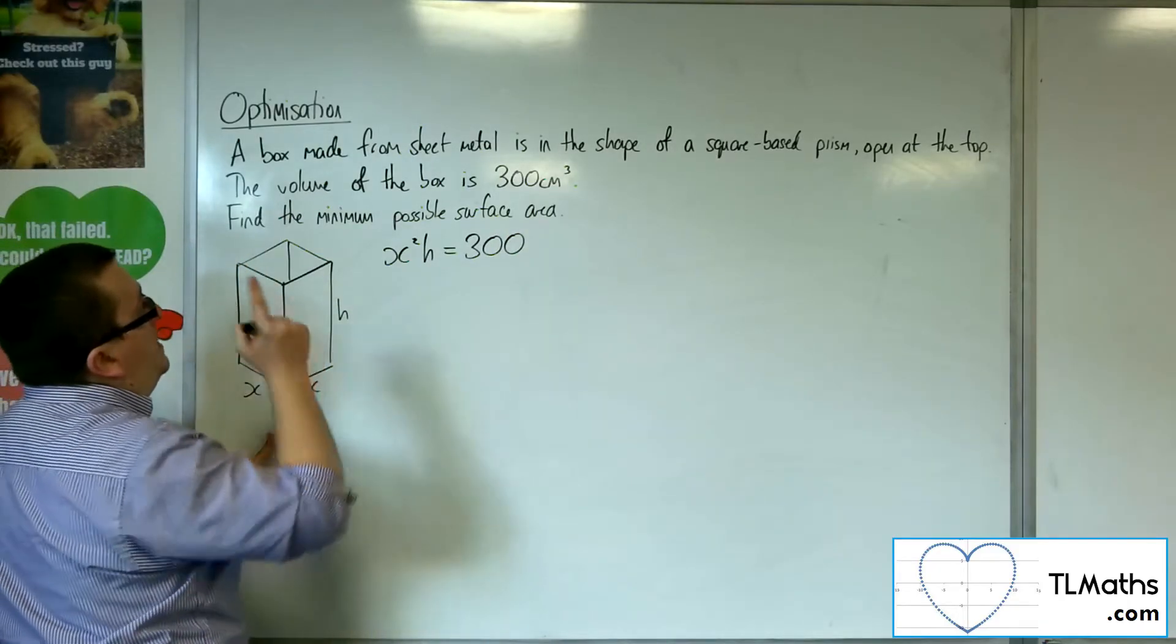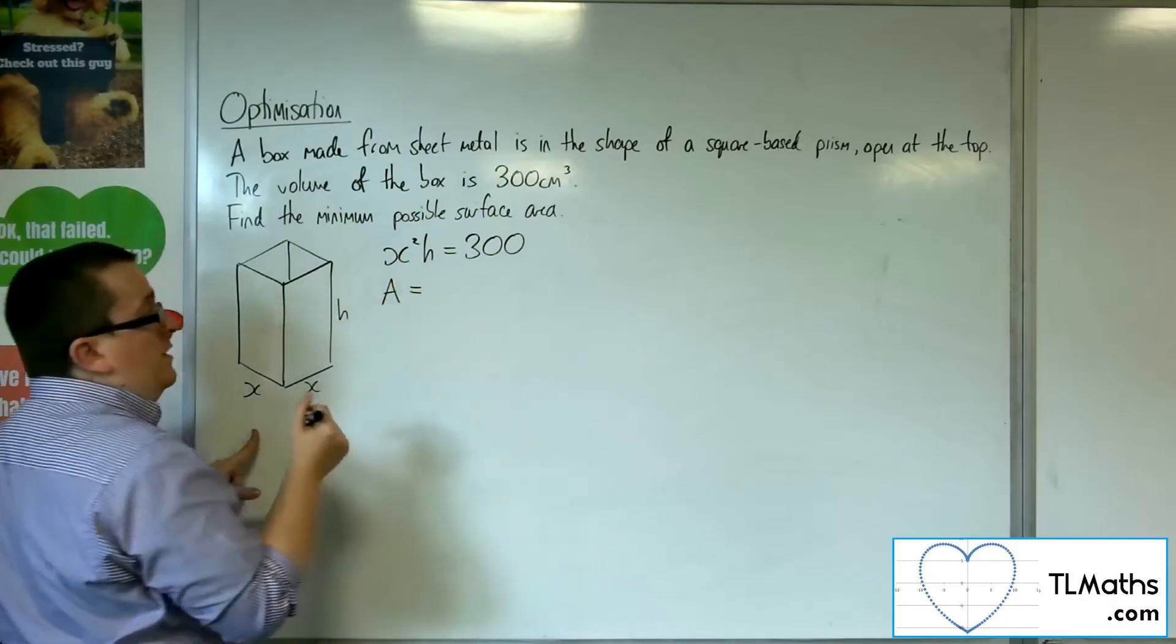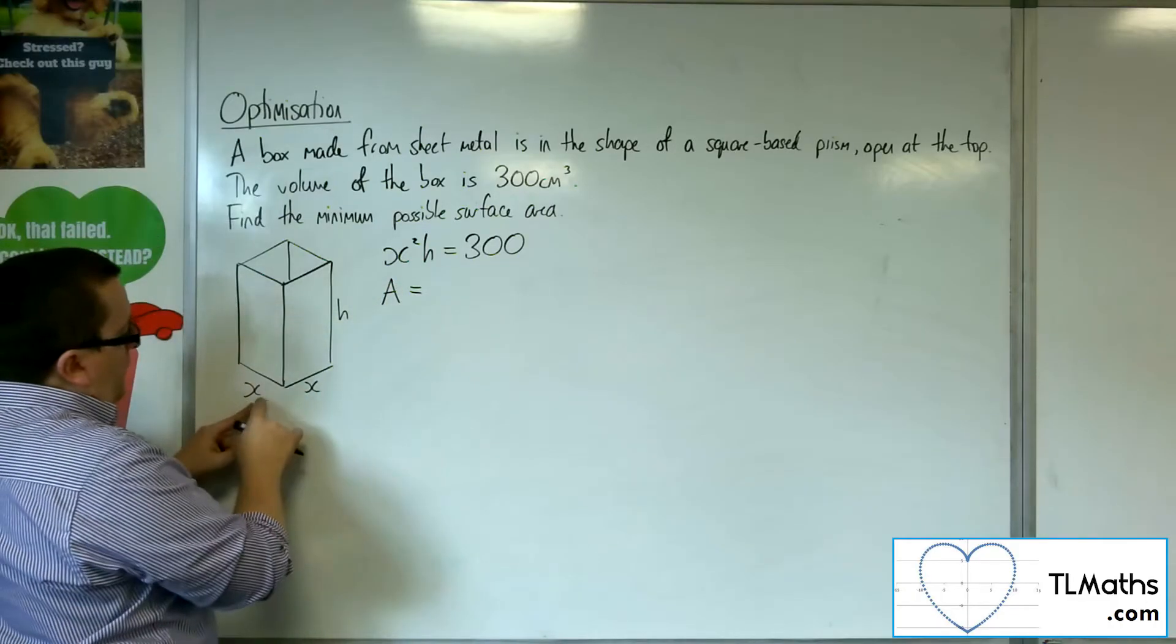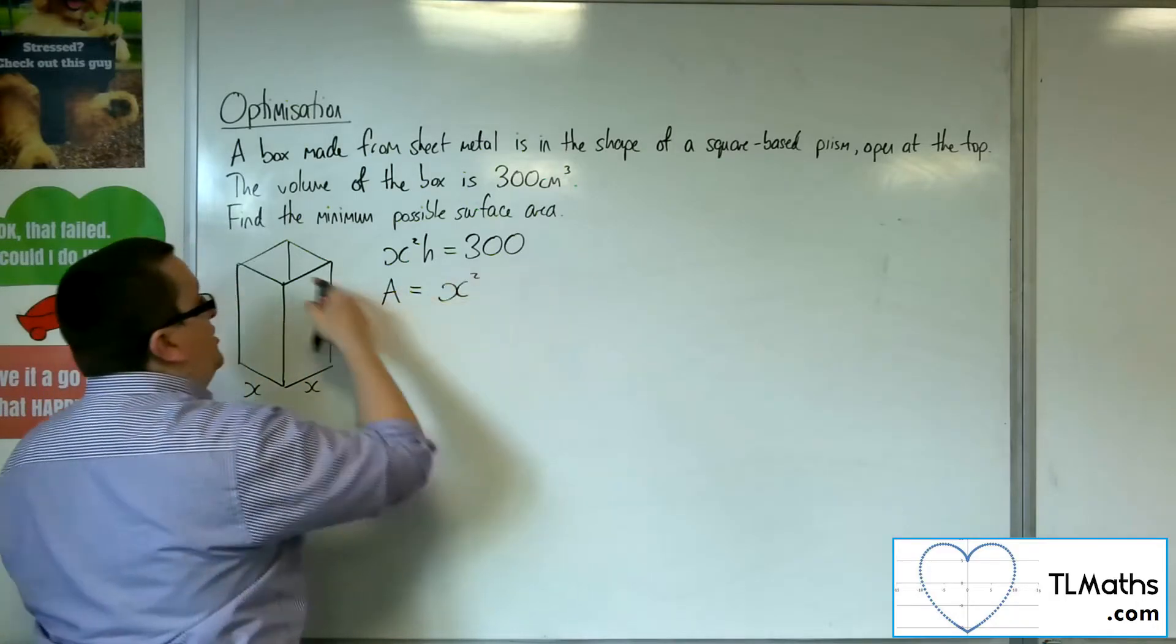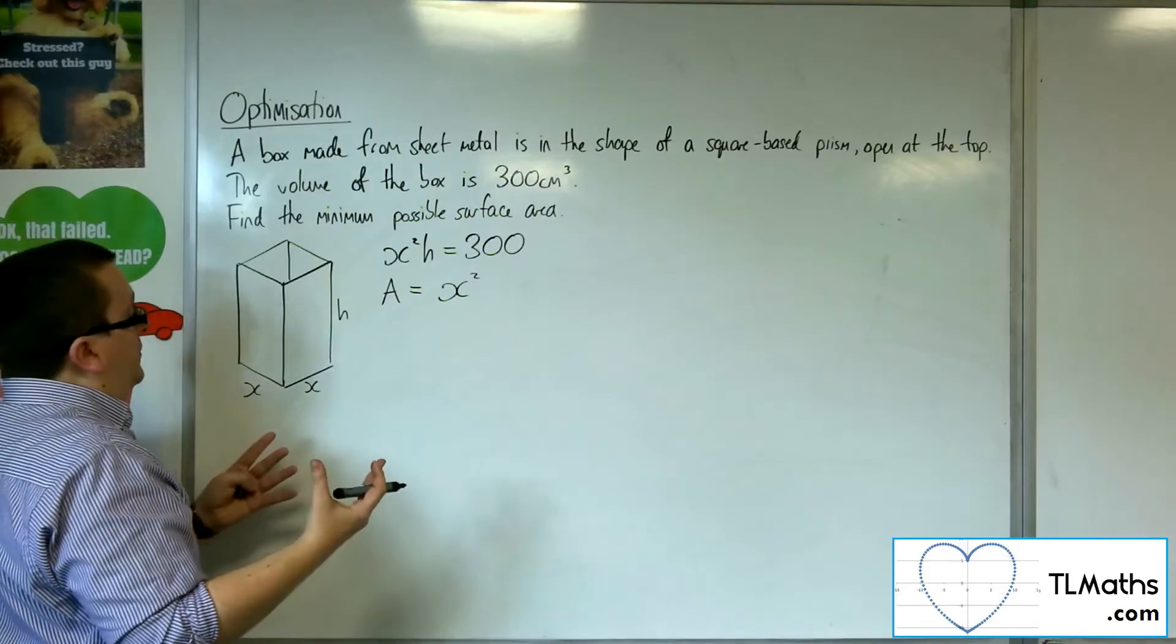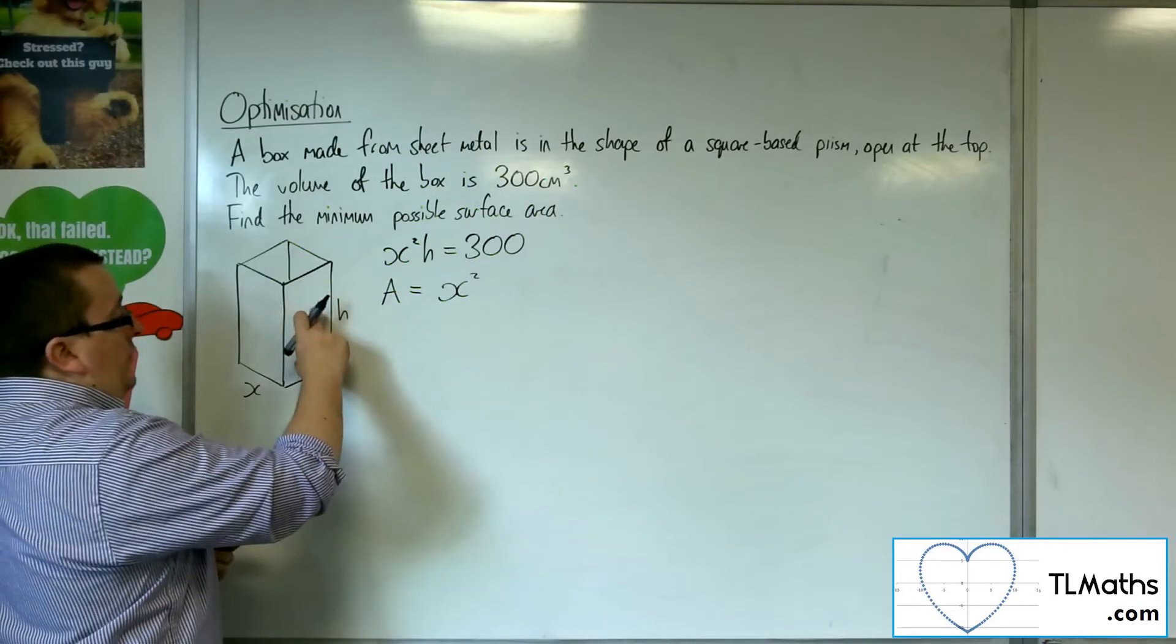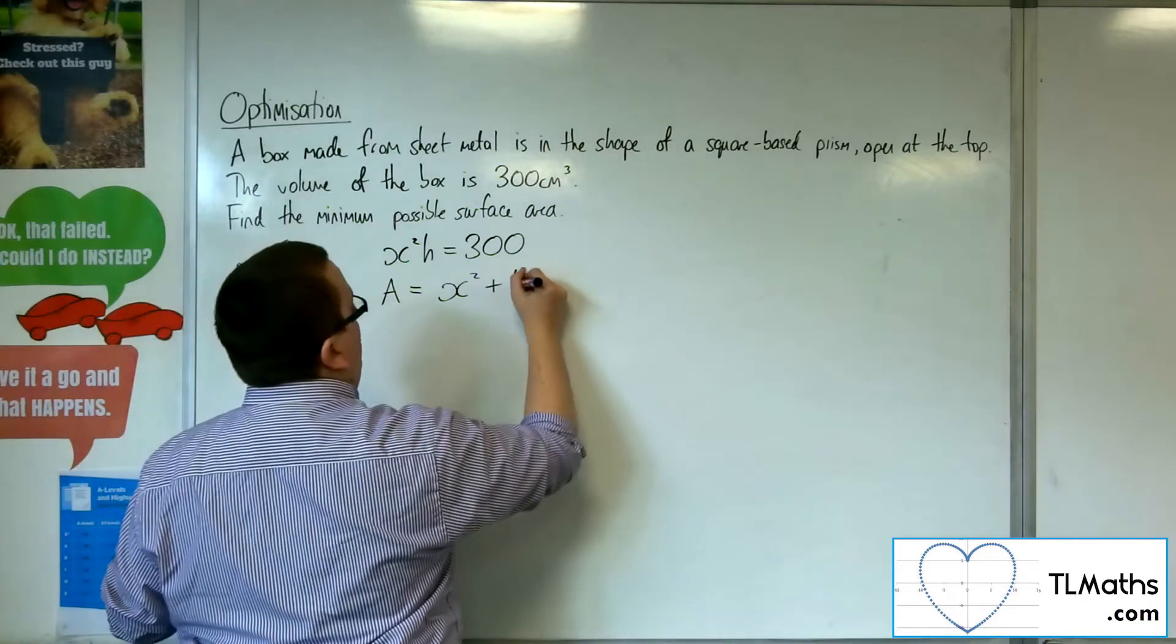Now I want to minimize the surface area. So the surface area I can write down: I've got x times x for the base, so x squared. There's no top, so it's not 2x squared—it's open-topped. Then I've got x times h for that side, and I've got four of those, so it's 4xh.